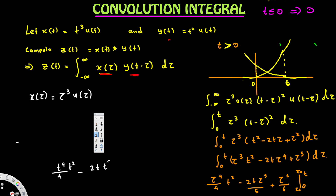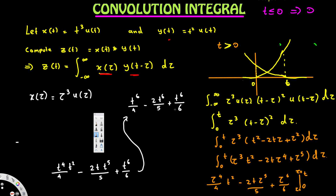Since integrating with respect to tau, we substitute tau equal to t — the tau equals zero term vanishes. Substituting gives t to the fourth over four times t squared, minus 2t times t to the fifth over five, plus t to the sixth over six. Simplifying, each term becomes t to the sixth: t to the sixth over four minus 2t to the sixth over five plus t to the sixth over six. Taking the common denominator of 120 gives 30 t to the sixth minus 48 t to the sixth plus 20 t to the sixth, all over 120, which equals 2 over 120, or t to the sixth over 60.